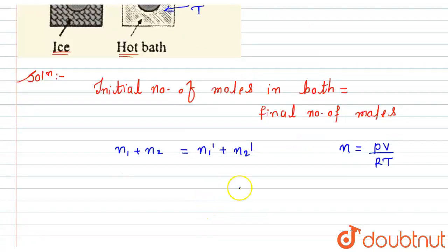So according to this, by using this formula I can write PV divided by R into T₀, T₀ will be 273, plus PV divided by R, here T₀ will be same that is 273.